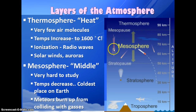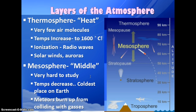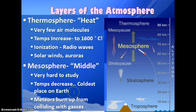Below the thermosphere is the mesosphere — think 'mezzo' for middle. It's the layer we know the least about; it's very hard to study and can only be accessed using sounding rockets. Temperatures decrease significantly here, making it the coldest place on Earth. This is also where meteors burn up — they collide with gas molecules and combust.